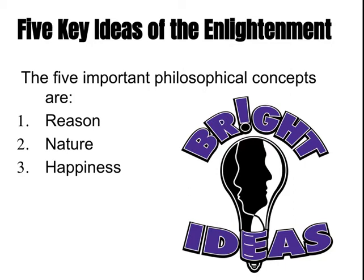The third key idea is happiness. The Enlightenment is very optimistic — thinkers believed that people could become happier through better understanding of how the world runs, and that governmental and economic systems could be put in place to increase people's happiness. They also believed in progress, that everything was getting better and that they could help improve people's happiness and move people forward.